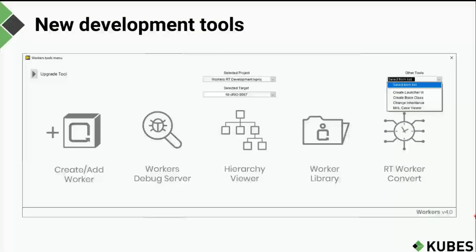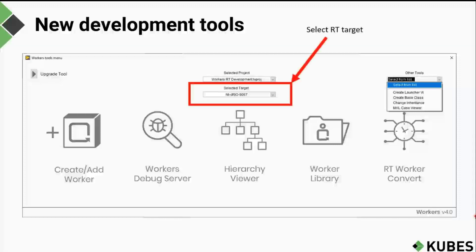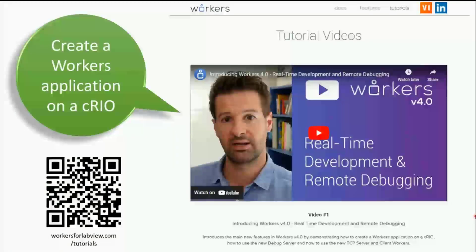This is what the Workers 4 tools menu looks like — there are a few new features since the previous version. In Workers 4, if your LabVIEW project contains an NI real-time target, when you load the Workers tools menu you now have the option to select which target to run the tools on. I won't be demonstrating how to create a Workers application on a real-time target here, but I've created a video walking through how to create a Workers application on a CompactRIO, available at workersforlabview.com/tutorials.